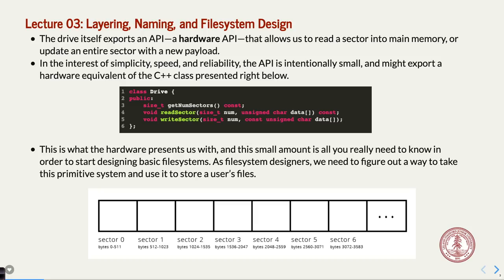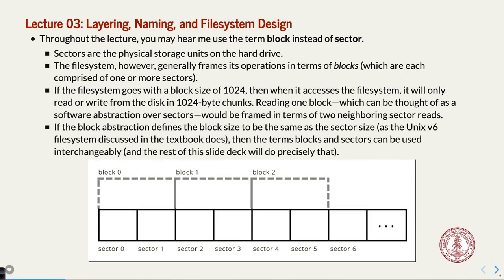We're going to talk about how you take this memory model and map files to it so that information persists. You may hear me say block and sector interchangeably. Sectors are defined on the disk itself — sector 0, sector 1, etc. You can have another abstraction where multiple sectors form a block. For our purposes, we're going to consider them the same: if I say block, think sector — the chunk of memory on the drive you can read and write to.